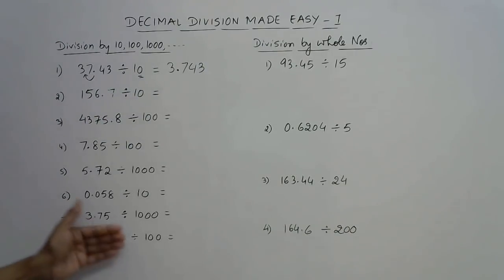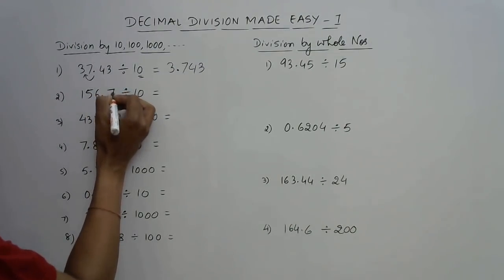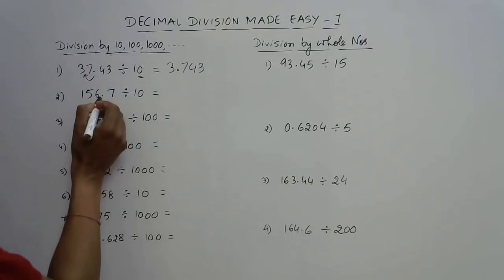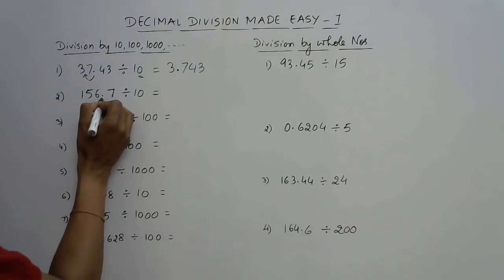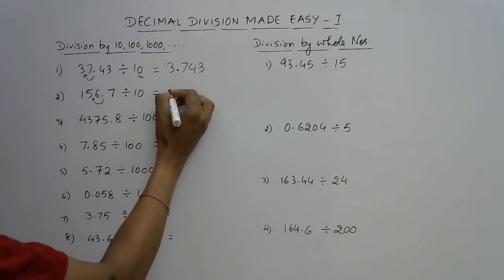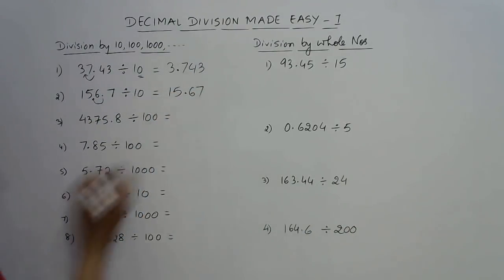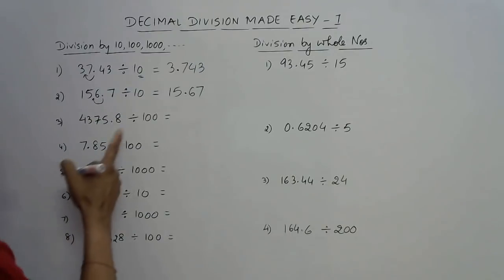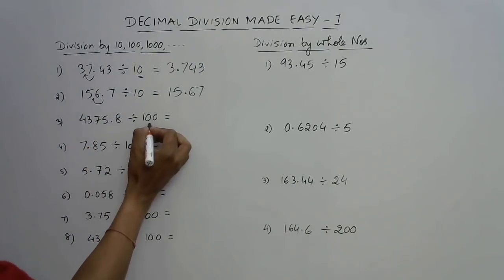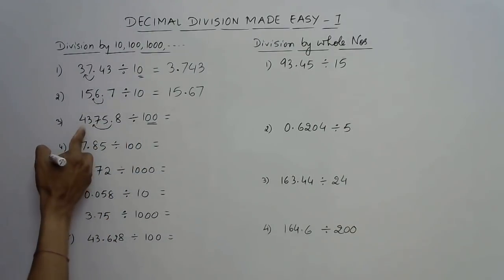We can practice this with several examples. For the next example, dividing by 10: the decimal moves one place left, so 156.7 becomes 15.67. Similarly, for division by 100 we have two zeros, so the decimal place moves two digits towards the left — giving us 43.758.